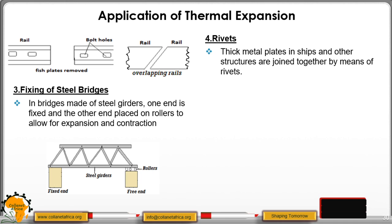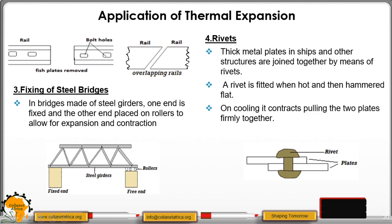Then we have rivets. When we want to fix two metal plates, we always use a rivet. A rivet is fitted when it is hot and then hammered, as you can see in our diagram here. We fix the rivet and then hammer on the lower side when it is hot. On cooling, that rivet will contract and it will pull the two plates together, and that will ensure that joint is very strong.